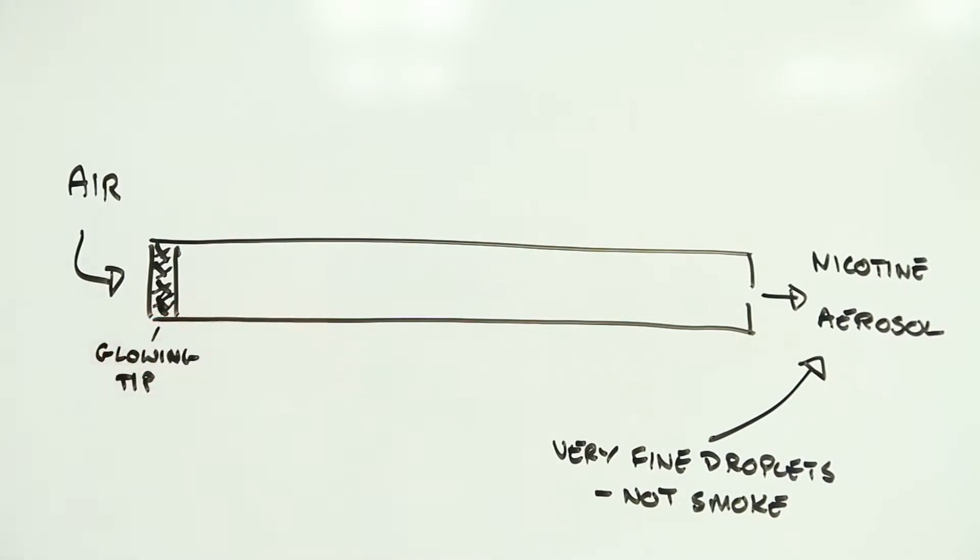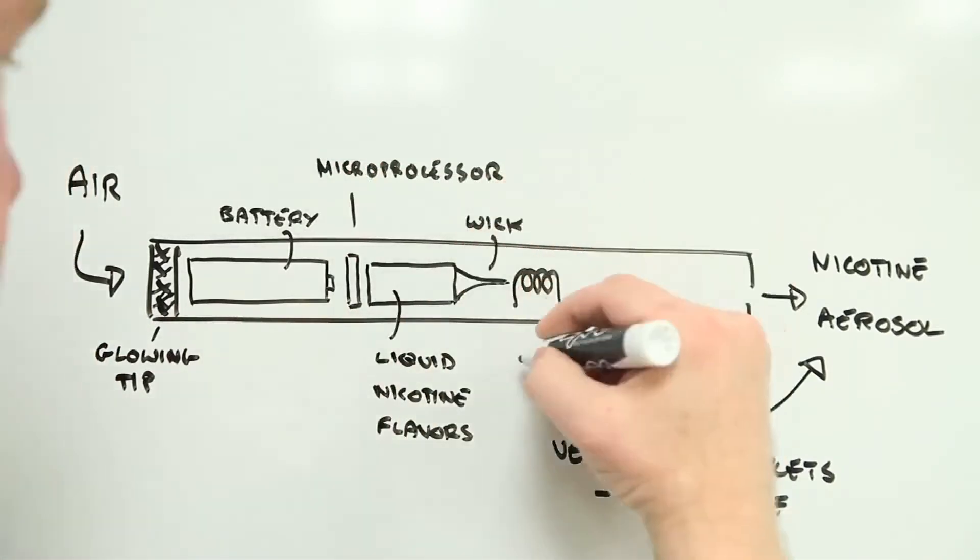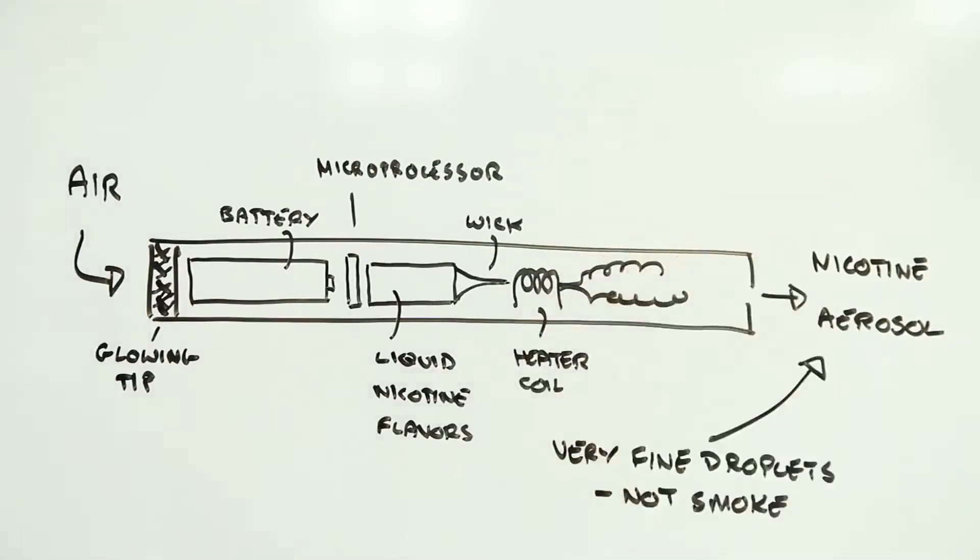E-cigarettes use a liquid such as glycerin into which ingredients like nicotine and even flavorings are dissolved. When you take a puff, this liquid is vaporized in a hot wire and forms a cloud of fine particles that, when inhaled, penetrate deep into your lungs.